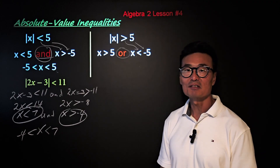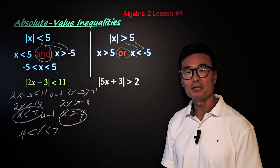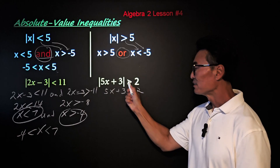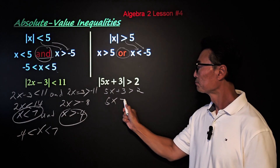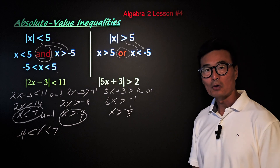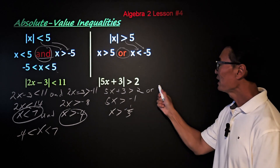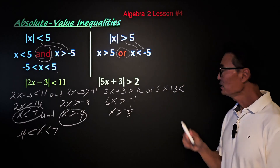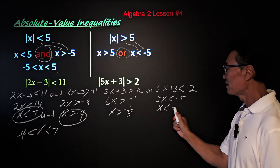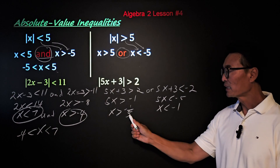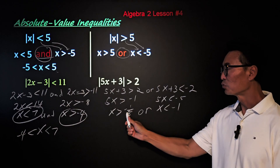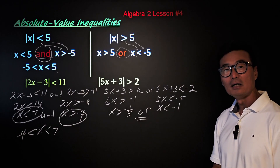Let's apply this to an example. If we're given absolute value of 5x plus 3 greater than 2, we write the first inequality as 5x plus 3 is greater than 2, giving us x is greater than negative 1 over 5. Because it's greater than, we use the word 'or' and set up the second equation with less than negative 2. Solving: 5x is less than negative 5, so x is less than negative 1. Our final answer is x is greater than negative 1/5 or x is less than negative 1.